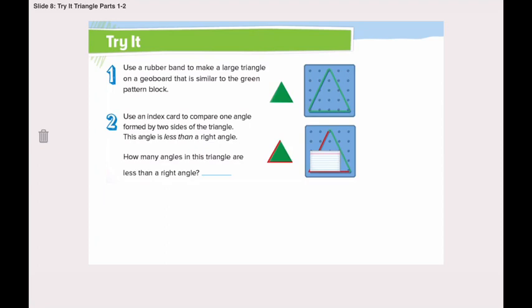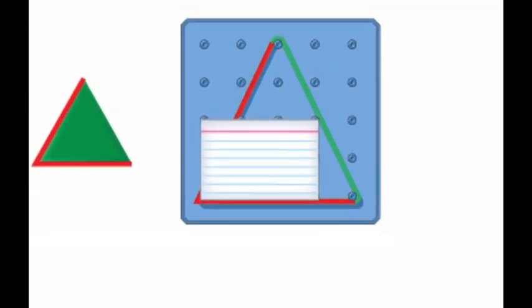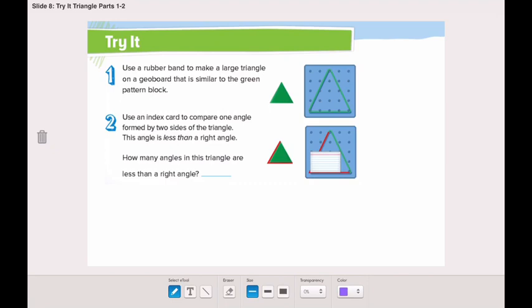Now turn the page and let's try another geoboard, but this time it has a triangle. Again, using the index card, compare one angle formed by two sides of the triangle. This angle is less than a right angle — it's not a right angle. The sides of the triangle do not fit the index card; it's not a square corner. How many angles in this triangle are less than a right angle? One, two, three — three angles in this triangle are less than a right angle.